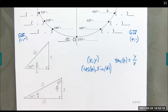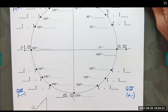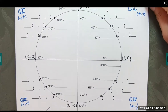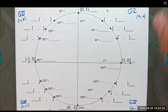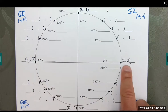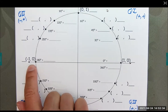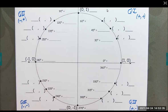Keeping all of that in mind, this is a unit circle — a circle that has a radius of exactly one. At each of the major points we have ordered pairs: (1, 0) at 0 degrees, (0, 1) at 90 degrees, (−1, 0) at 180 degrees, and (0, −1) at 270 degrees.